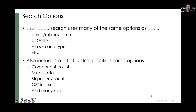LFS find itself already has many of the same options as a regular find command. You can search by different timestamps — atime, mtime, ctime — UID, group ID, file size and type, etc. And it also includes a lot of Lustre-specific search options. You can search by things like component count, near states, stripe size, stripe count, OST indexes, and quite a few others.